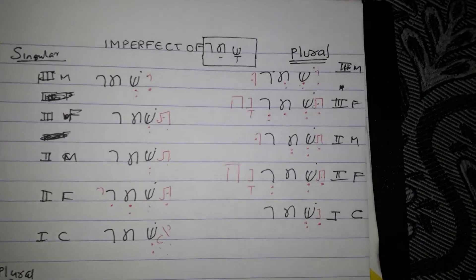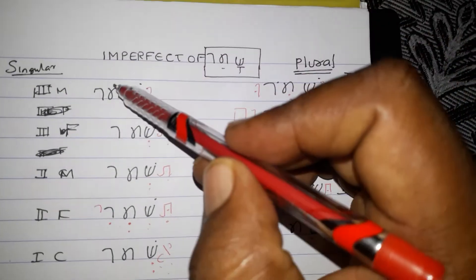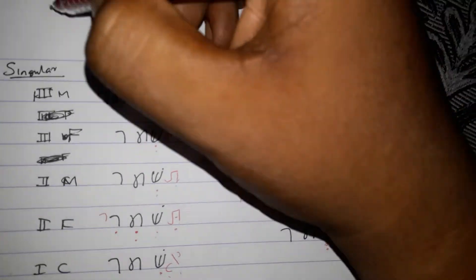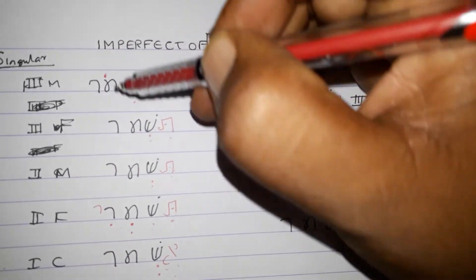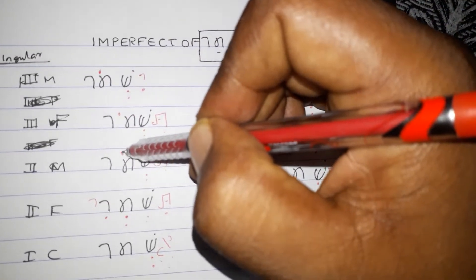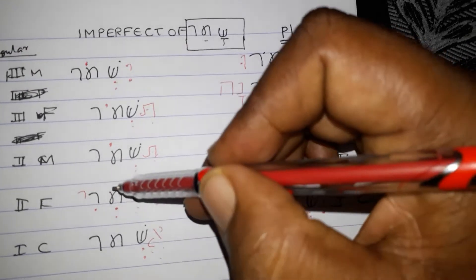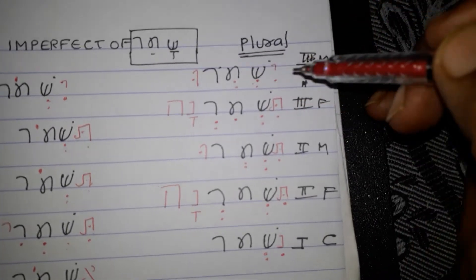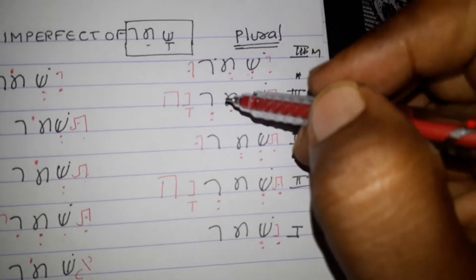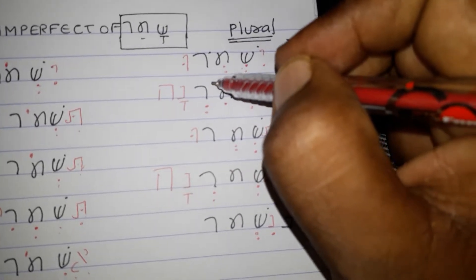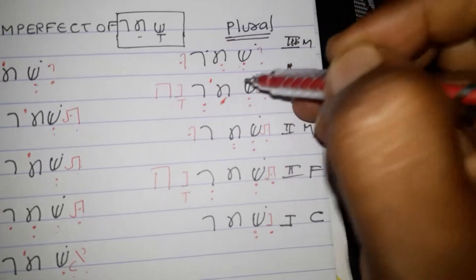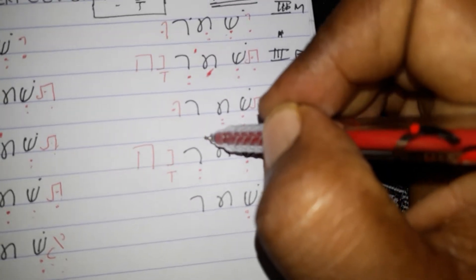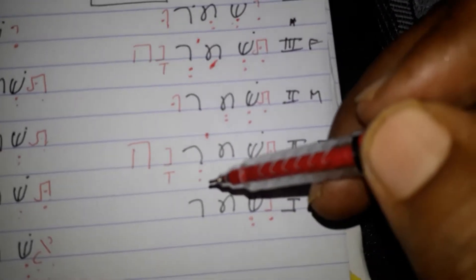Then another speciality is Holam, that will be placed in the second letter above. So wherever there is no vowel, you add a vowel or Shava — they add Holam there. So Yishmor, Tishmor. Then Tishm'ru, Tishm'rena. There is no vowel here, so this framework is wrong. And here also no vowel, so Tishm'rena, Nishmor.